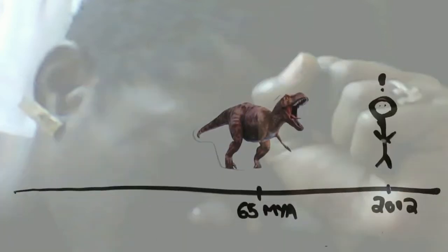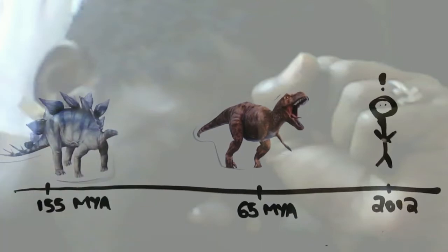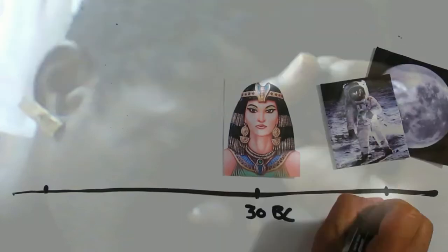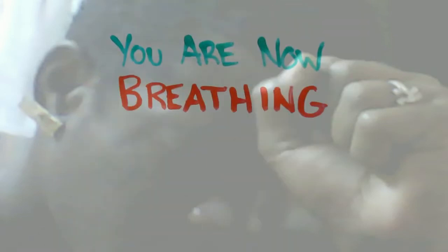The Tyrannosaurus, in terms of time, is closer to today than to when the Stegosaurus roamed the Earth. To the same token, Cleopatra lived closer to the first moon landing than to the construction of the pyramids. And just for fun, when I say it, you are now breathing manually.